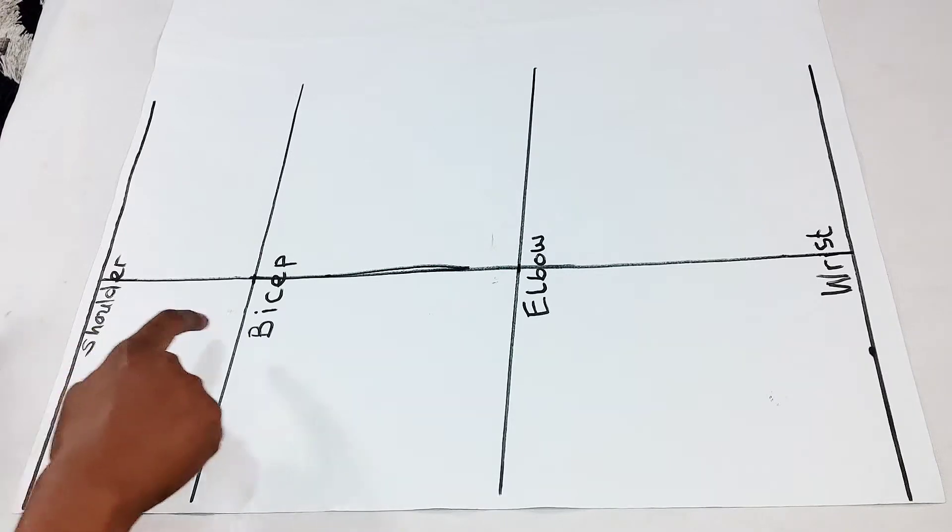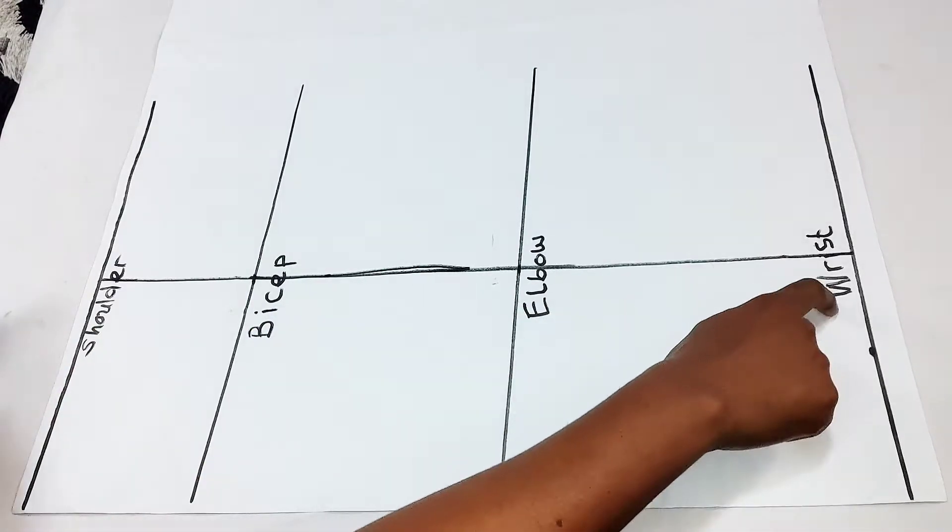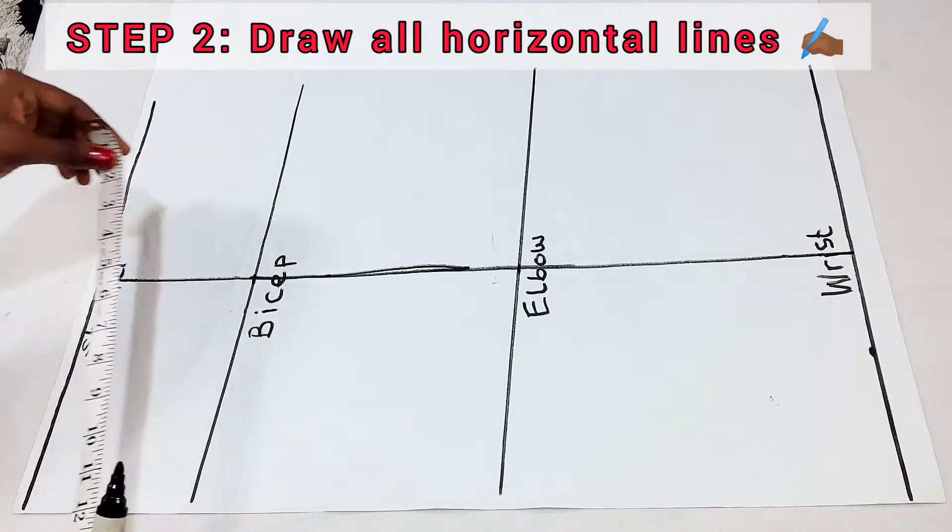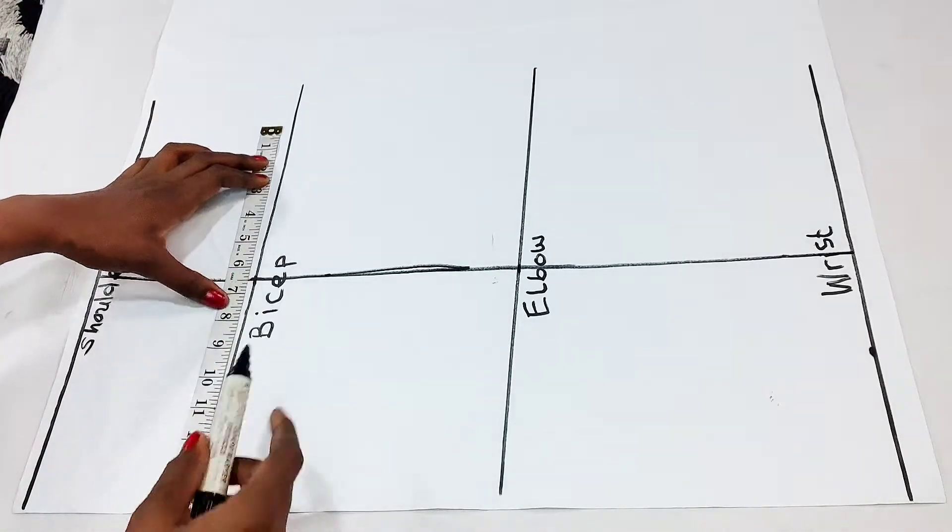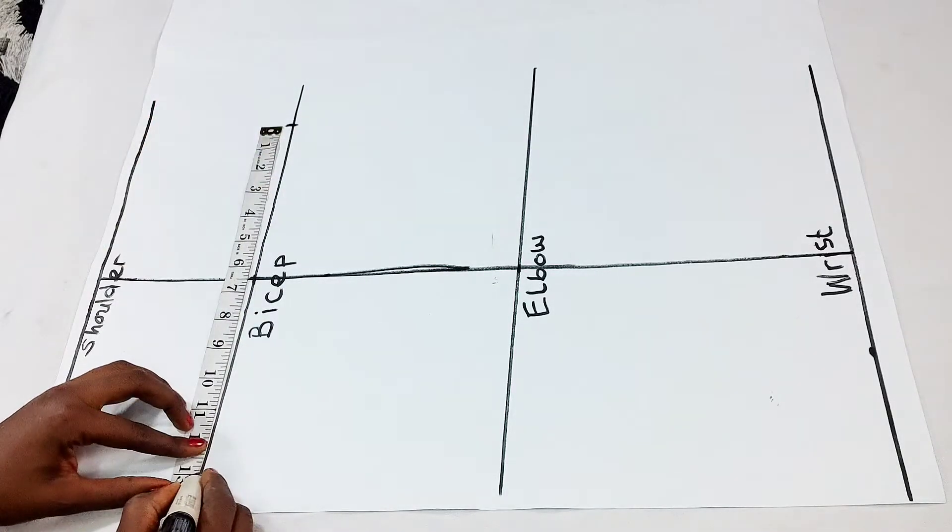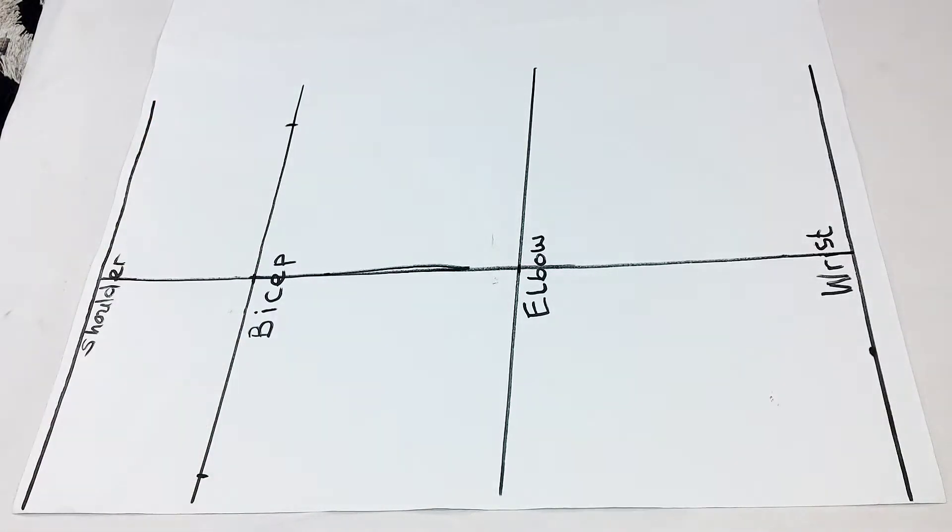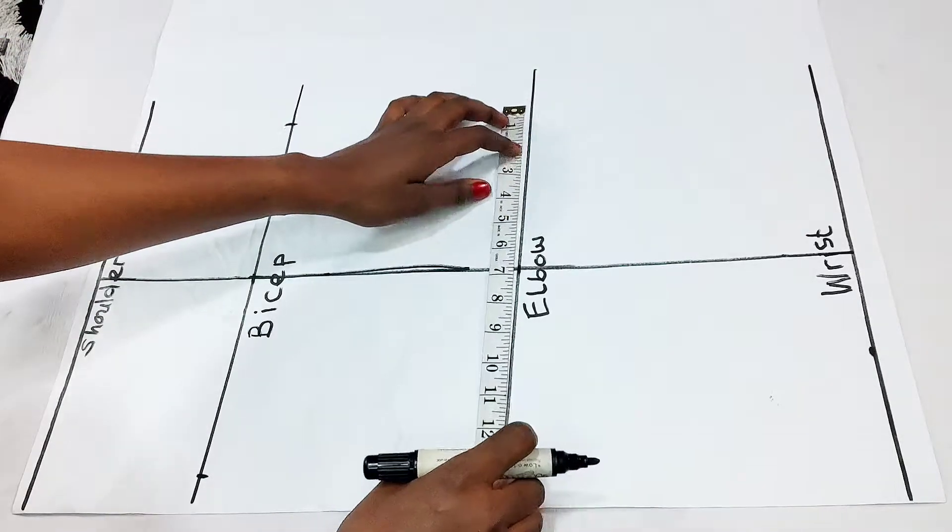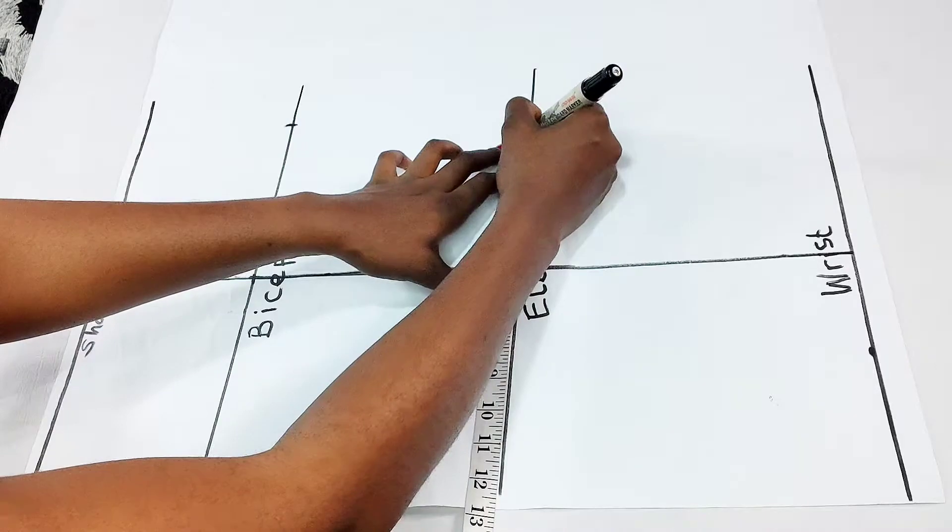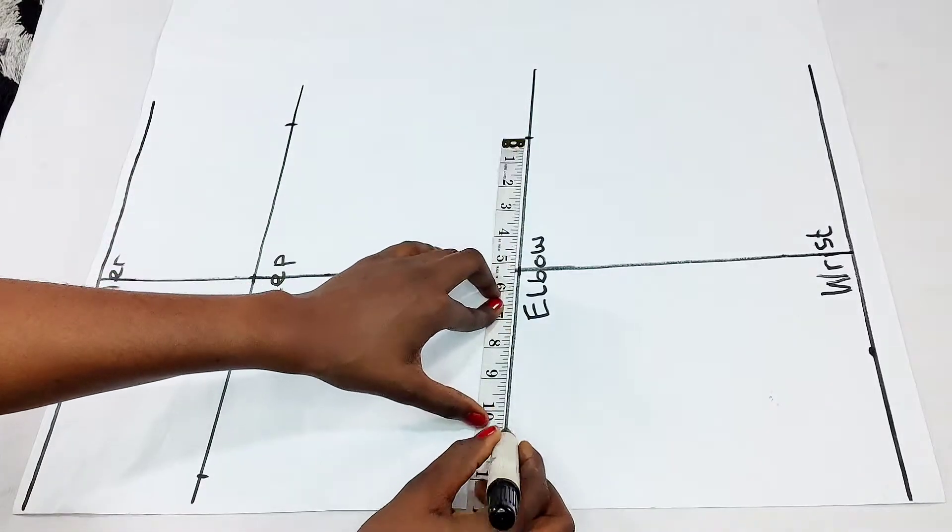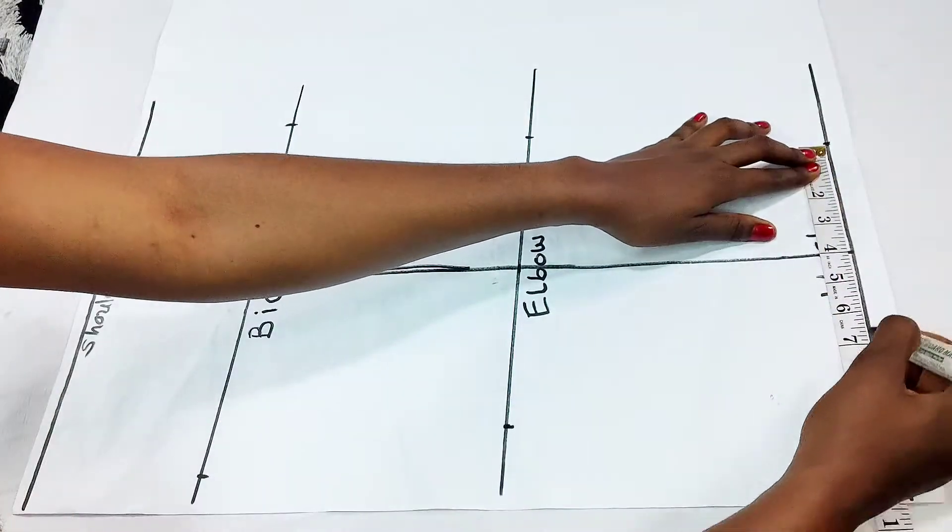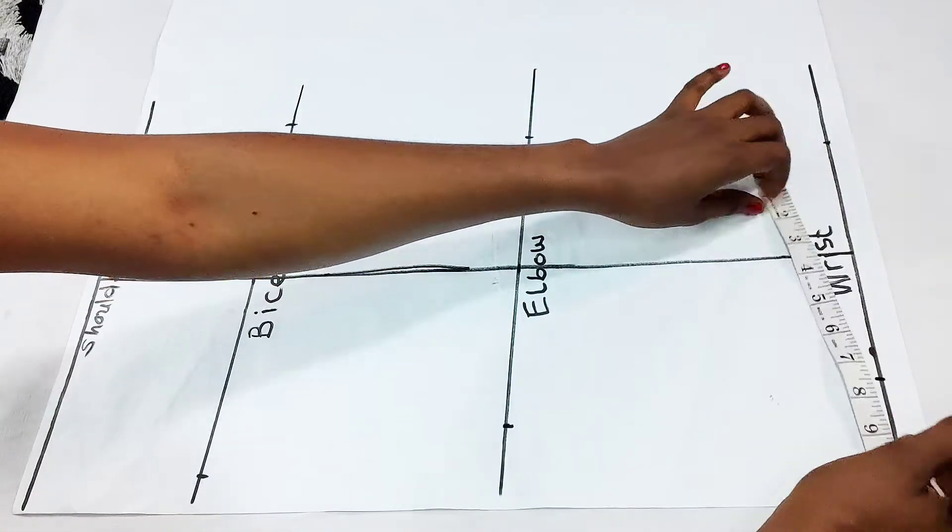Now we have our shoulder, bicep, elbow, and wrist lines. We go over to get our horizontal measurements. My bicep is 13 inches, so I'm going to share that measurement into two with my center line being in the middle. My elbow is 10 and a half inches, so I have five and a quarter of an inch on both sides, and my wrist is eight inches, so I have four inches on both sides.